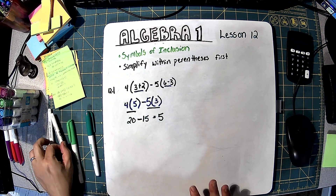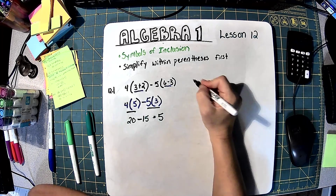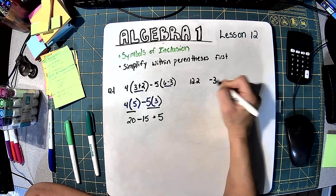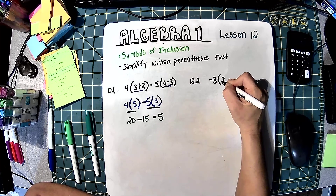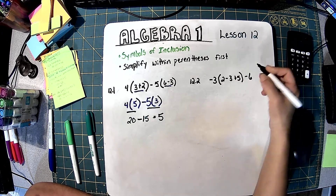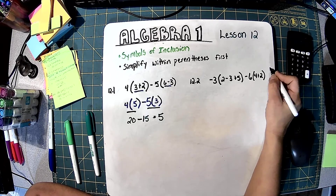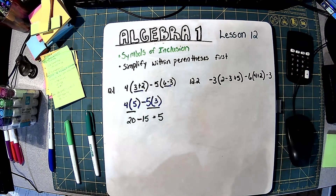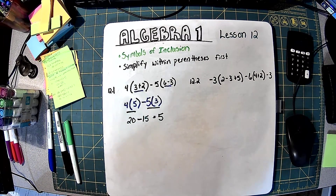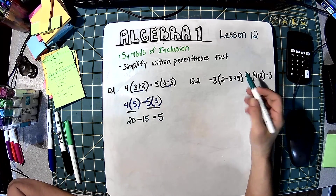That's just an extra step on top of what we learned in the last lesson. 12.2 is negative 3 times (2 minus 3 plus 5) minus 6 times (4 plus 2 minus 3). We're going to work the stuff inside the parentheses first, leave it in parentheses because touching means multiply, then we're going to multiply, and then add or subtract.